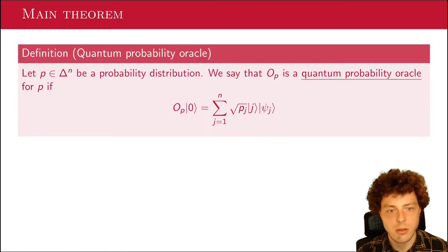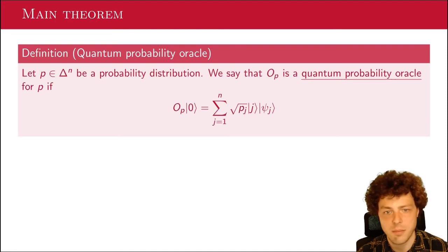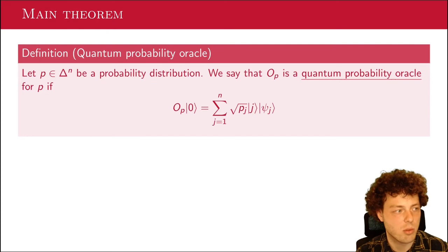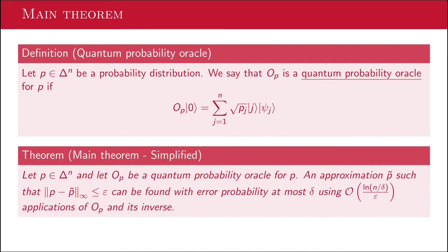And the goal of this talk is to show that there is actually a quantum version of this algorithm that also does multidimensional probability distributions and still gets a quadratic advantage. Okay, so I have to start with a definition here. What is a quantum probability oracle? The thing that was on the first slide.